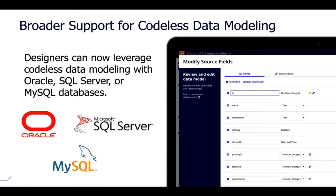We've centralized all aspects of record action security — process model security is now shown in the record type so you can adjust permissions all in one place. We're also providing broader database coverage for codeless data modeling. Last year we introduced codeless data modeling for MariaDB; now you can leverage the same power for Oracle, SQL Server, or MySQL databases. Anytime you add, delete, or update a record field, we'll do all the heavy lifting to reflect those changes in your data source.